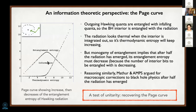Monogamy of entanglement implies that after half the radiation has emerged, the entanglement entropy must start decreasing again, because the number of interior bits you can be entangled with is decreasing. This is similar to the reasoning that led Mathur and the AMPS authors to argue for macroscopic corrections to black hole physics after half the radiation has emerged. From this information theoretic perspective, a test of unitarity is recovering the Page curve—demonstrating that the entanglement entropy of Hawking radiation will increase and then decrease, or flatten out if the black hole comes into equilibrium.